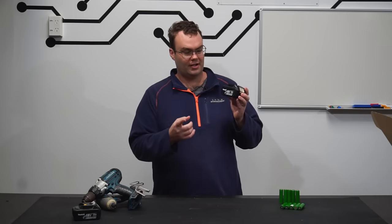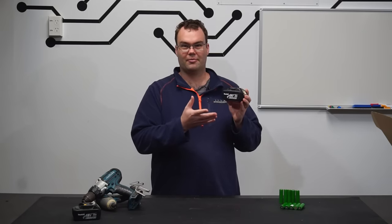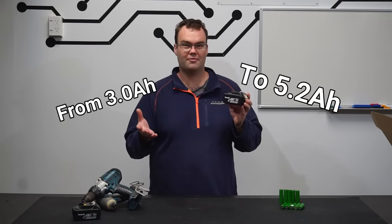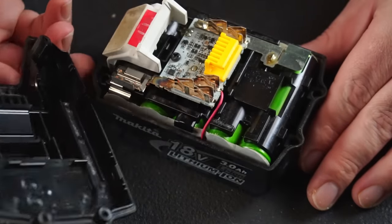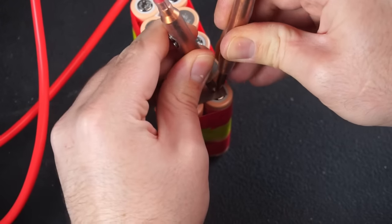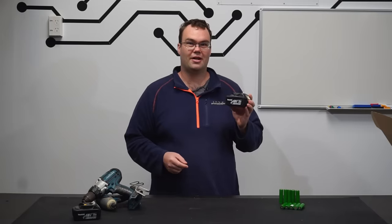Long story short, I increased the capacity from 3 amp hours to 5.2 amp hours and did it for only $16 with salvage cells. So let me show you how I went about it.